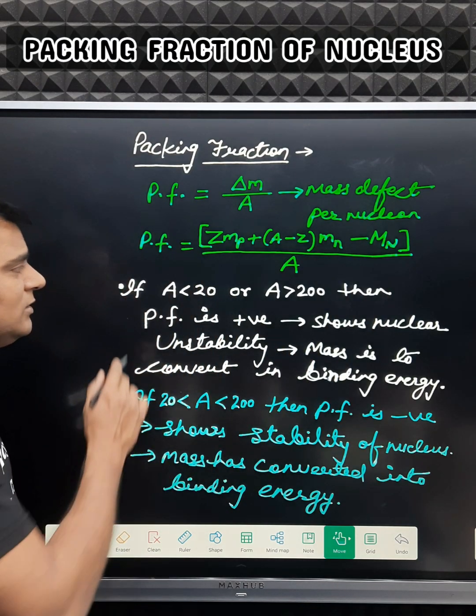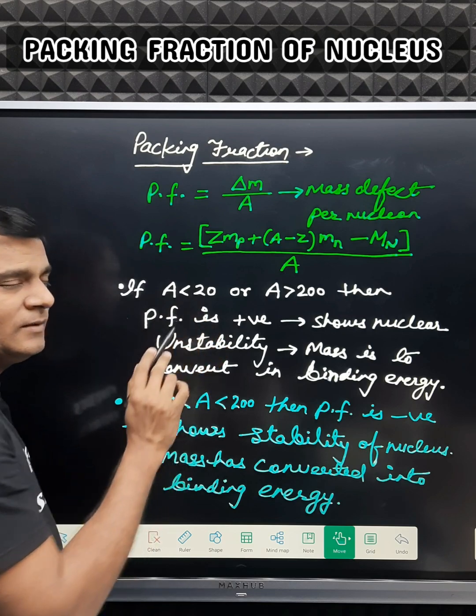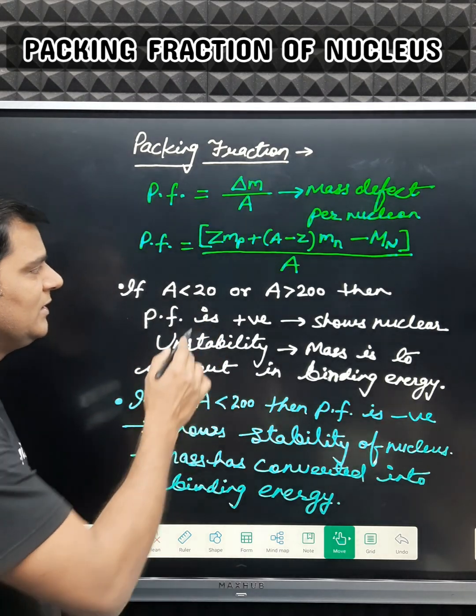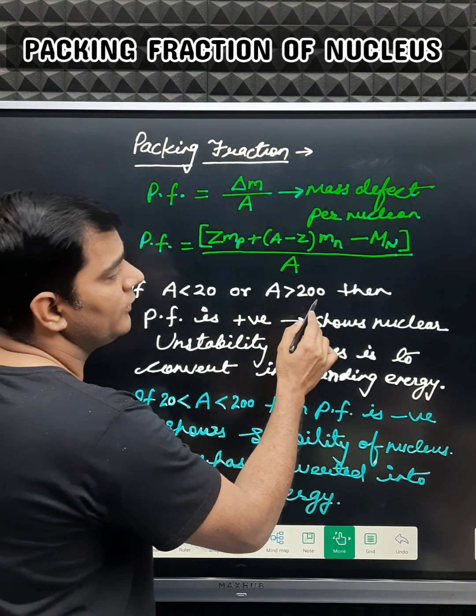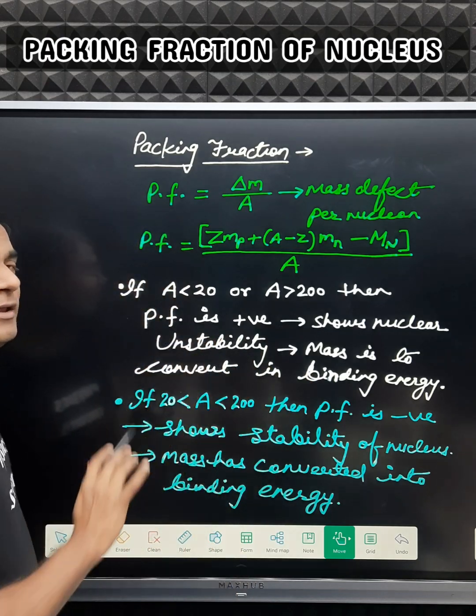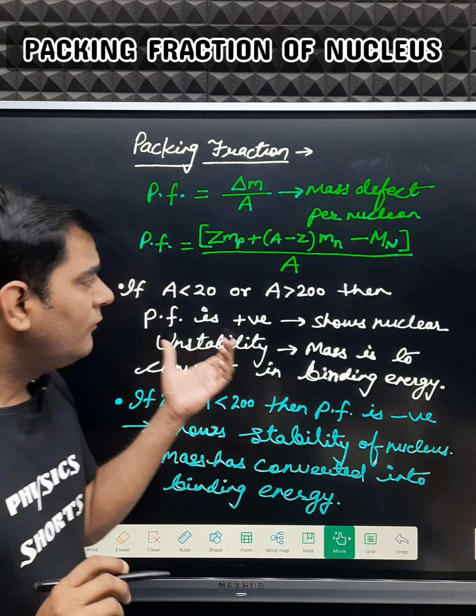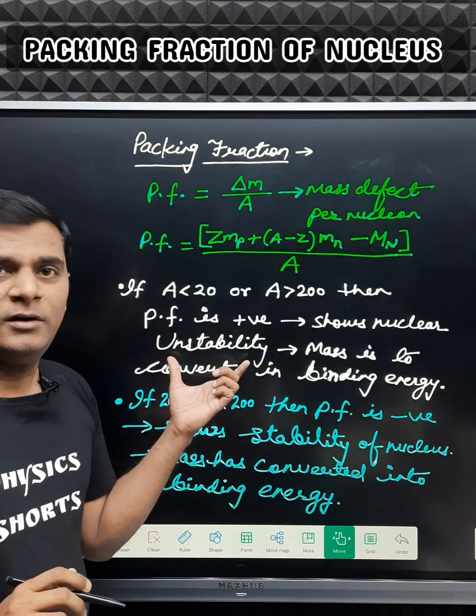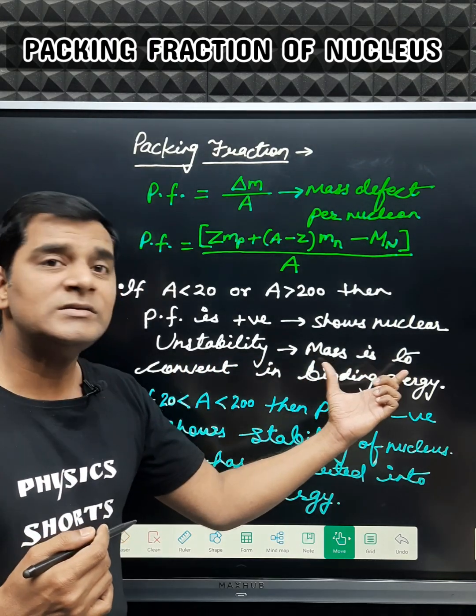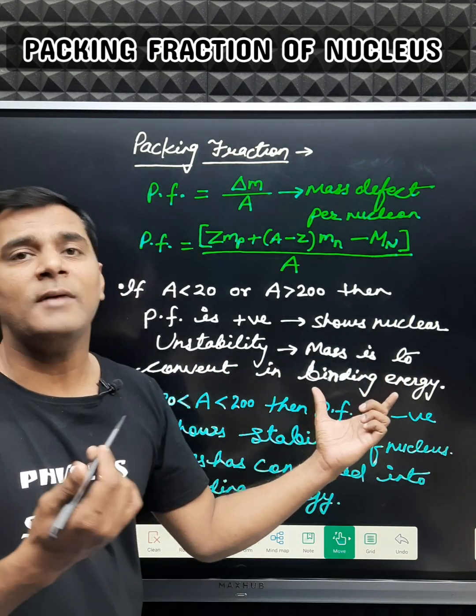of this packing fraction. The first: if A is less than 20 (mass number or number of nucleons is less than 20) or A greater than 200, then the packing fraction will be positive. For this, the nucleus will be unstable, and this instability means mass has to be converted into the binding energy—it is not yet converted.